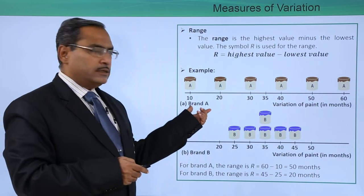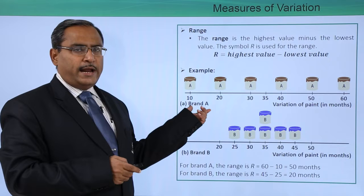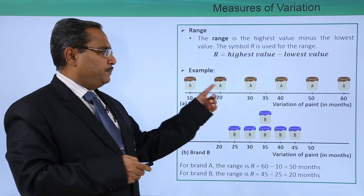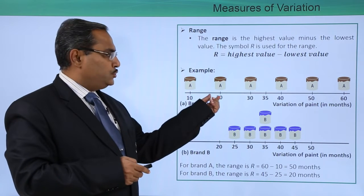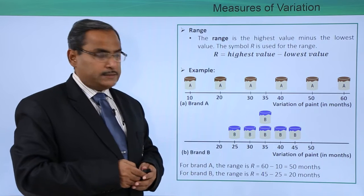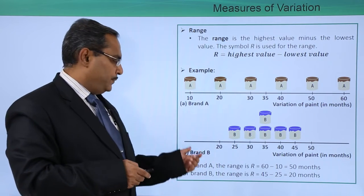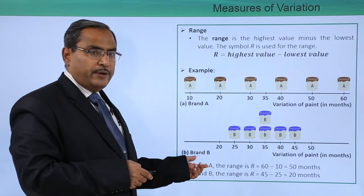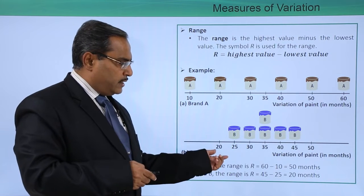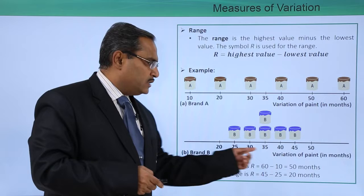Let us consider one example for brand A paint. These are the paints which got consumed for this number of days. The variation of paint in months is to be calculated, and this is for brand B. We have found that the variation of paint in months has been shown here.